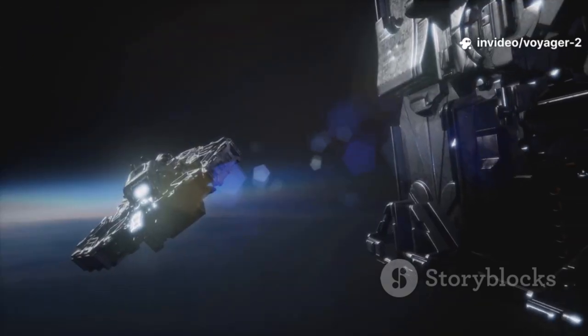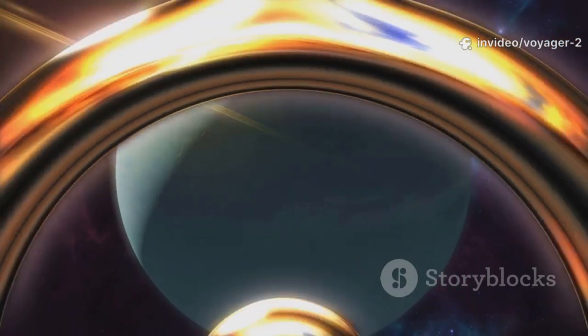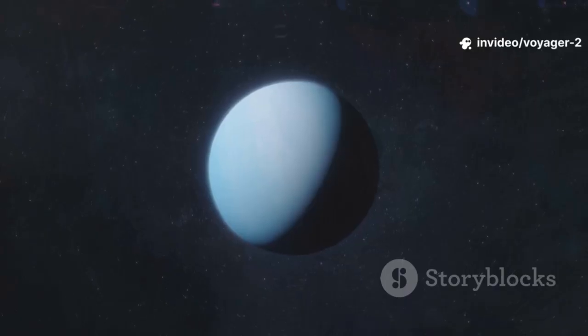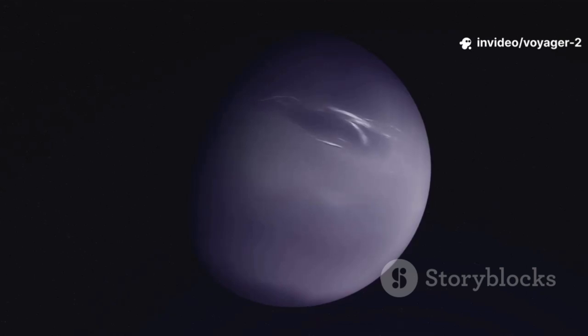Unlike its twin, Voyager 2 pressed on to Uranus and Neptune, worlds no spacecraft had ever visited. At Uranus it discovered new moons, rings, and a bizarre magnetic field. Neptune, its final planetary stop, was a deep blue world with the fastest winds in the solar system and geysers erupting from Triton.